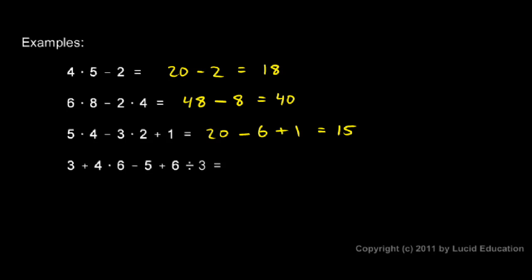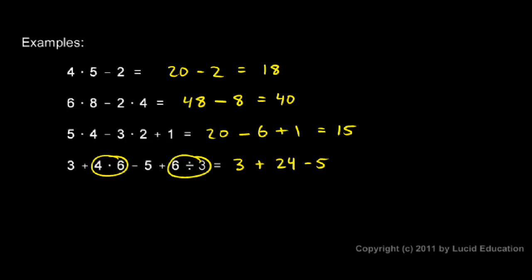For this last one, I go left to right and rewrite the whole problem, doing the multiplication and division first. The problem becomes 3 plus — I do that multiplication, 4 times 6, which is 24 — so 3 plus 24, then minus 5, then plus — I do the division, 6 divided by 3, which is 2 — so plus 2. Now doing all the addition and subtraction left to right: 3 plus 24 is 27, 27 minus 5 is 22, and 22 plus 2 is 24. So 24 is my answer.